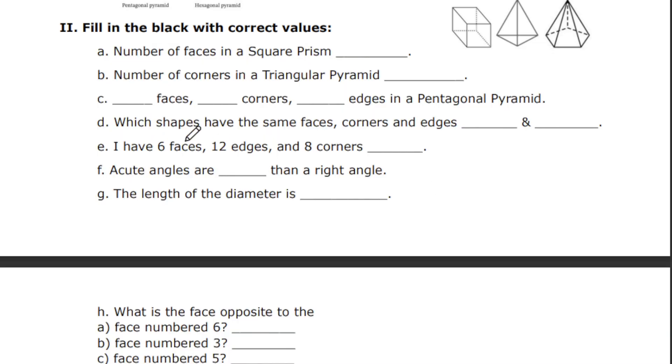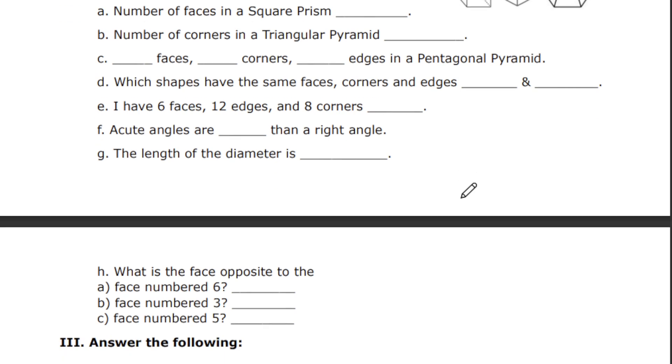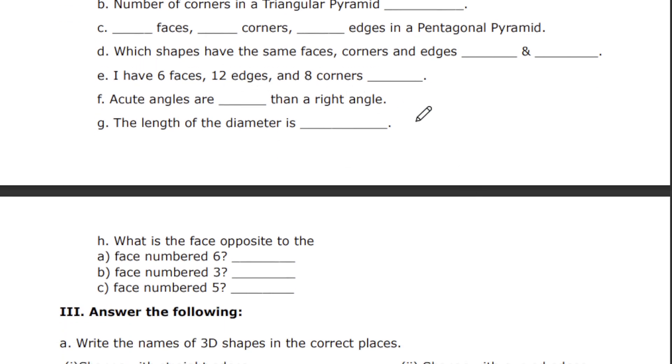Next, I have 6 faces, 12 edges, and 8 corners. You need to write the shape. Which shape has 6 faces, 12 edges, and 8 corners? Acute angles are blank than the right angle.